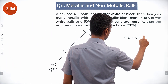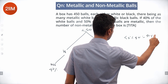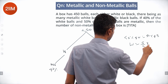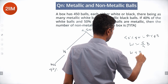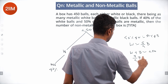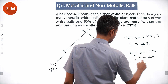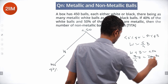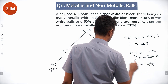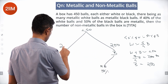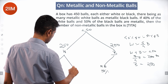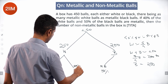So 40% of W equals 50% of B, which gives W = (5/4)B. Since W plus B equals 450, we get (9/4)B = 450, so B = 200, W = 250. Metallic white is 100, metallic black is 100.